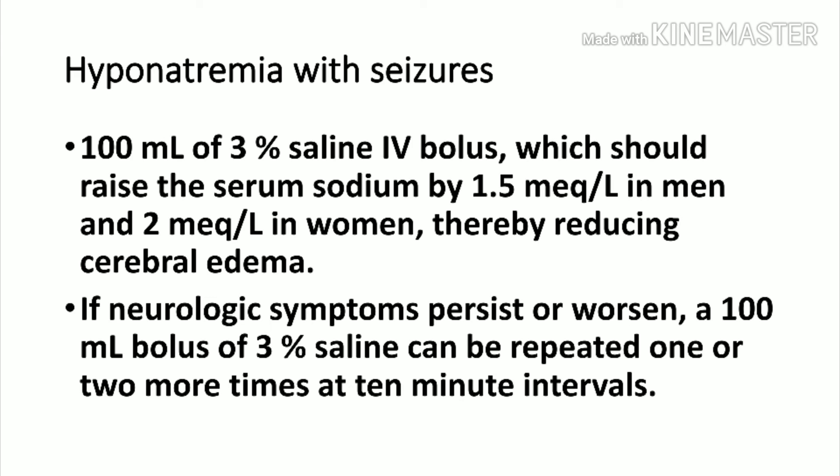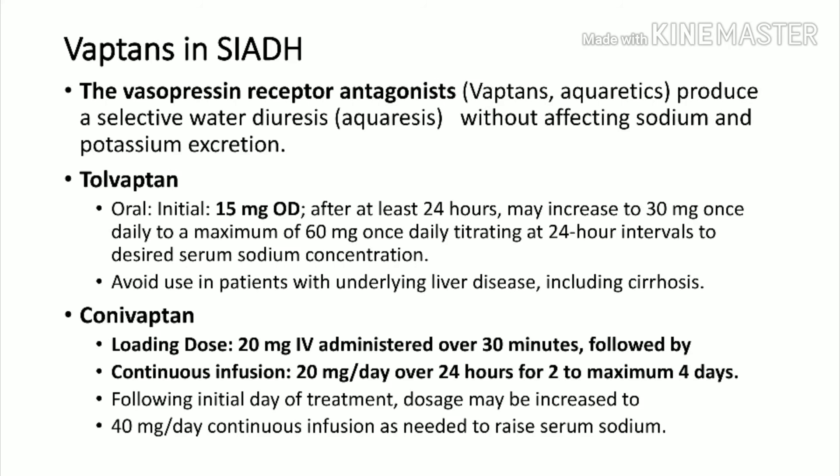Vaptans are vasopressin receptor antagonists used mainly in SIADH. There are two drugs: tolvaptan (oral tablet, 15 mg once daily, up to 60 mg once daily) and conivaptan (injectable, 20 mg IV over 30 minutes followed by 20 mg per day continuous infusion for up to four days). Tolvaptan must be used with caution in liver disease; liver function tests should be checked every two weeks and it should not be continued indefinitely.